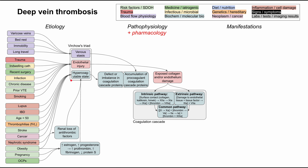Venous stasis and hypercoagulable state essentially lead to an imbalance in the proteins involved in the coagulation cascade. The cascade has both procoagulant and anticoagulant factors. With venous stasis, you may accumulate procoagulant factors, causing blood to clot and creating a DVT. Hypercoagulable states can involve either an accumulation of procoagulant factors or a shortage of anticoagulant factors — but in any case, the imbalance leads to a clot entering through the intrinsic or common pathway.